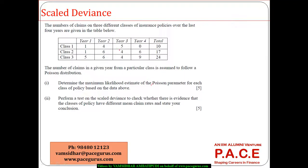Now let us look at this numerical with respect to scaled deviance. The number of claims on three different classes of insurance policies over the last four years: Class 1 has a total of 10 claims distributed like this, Class 2 around 17 distributed like this, and Class 3 has around 24 distributed like this.